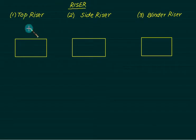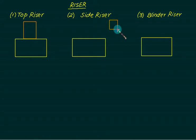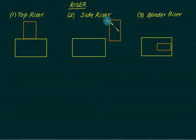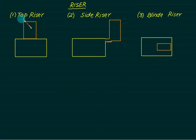As the name indicates, if you keep the riser on the top, it is called a top riser. If you keep the riser on the side, it is called a side riser. And if you keep the riser where you cannot see it, that is called a blind riser. You can visualize the top riser and the side riser, but you cannot visualize the blind riser. So we are basically interested in the top riser and the side riser.